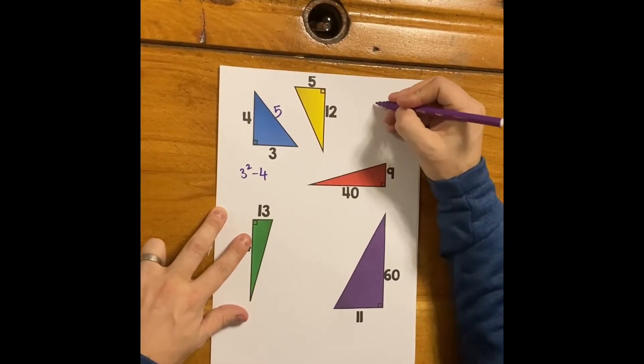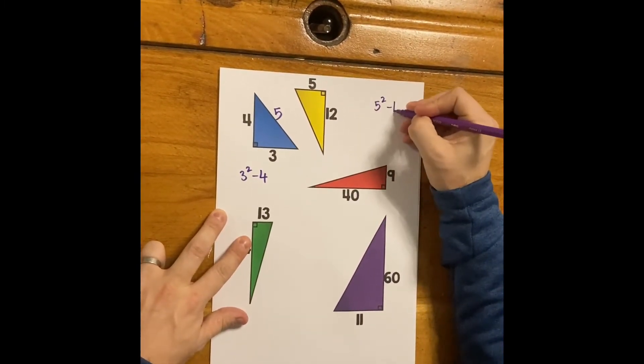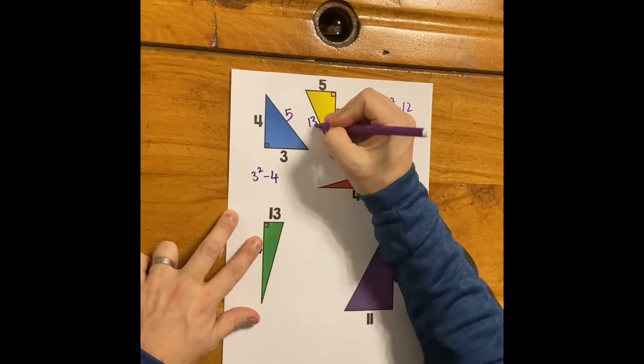This one here, if I take the smallest side, it's 5 squared, take away 12. 25, take away 12, it's 13. Boom.